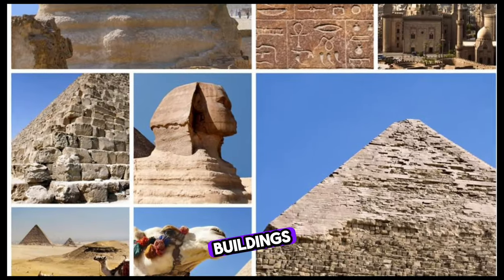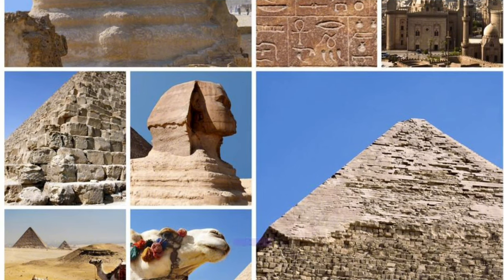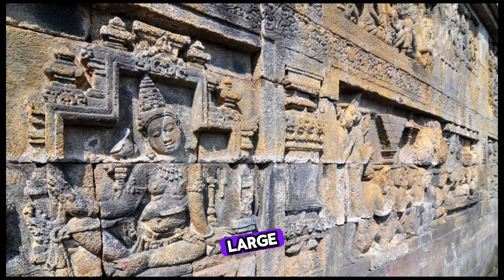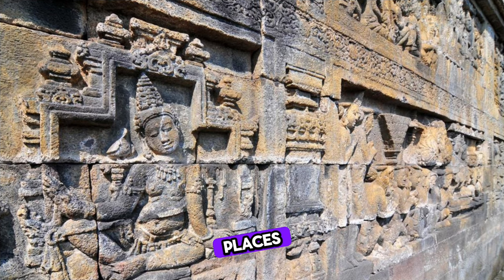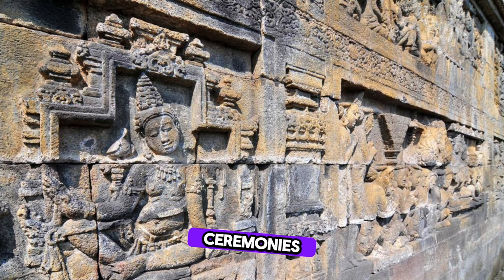Four: Famous Buildings — explanations of the surroundings, temples, and large structures that were places of worship, ceremonies, and public gatherings.